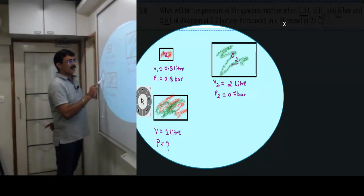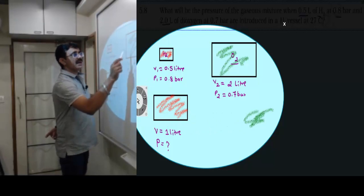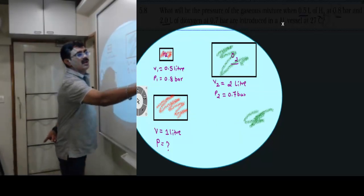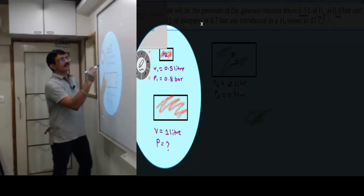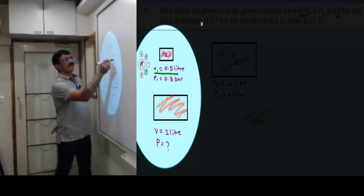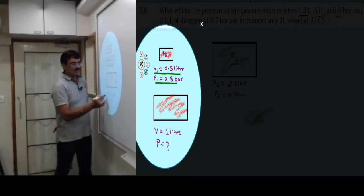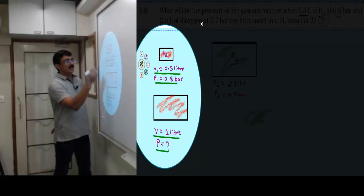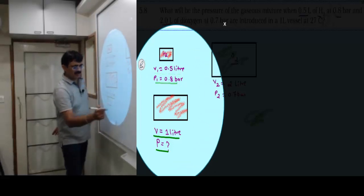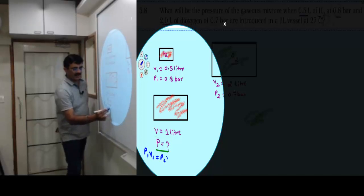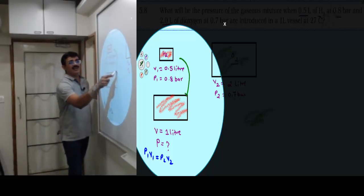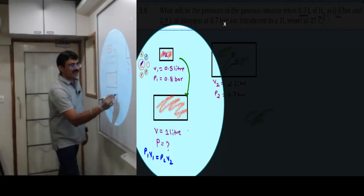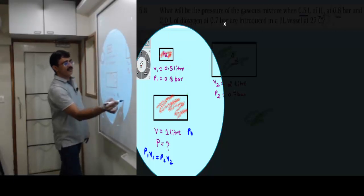It's important that we know the pressure of hydrogen and oxygen after shifting. The initial pressure won't remain the same, it will change. When hydrogen shifts here, its pressure will change. When oxygen shifts here, its pressure will also change.